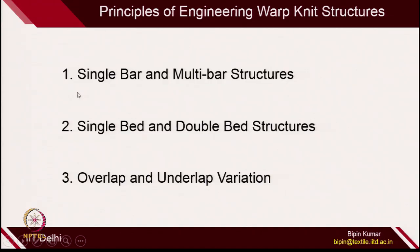Just a quick recap: if you want to engineer different types of warp knitted structures, there are 3 principles. Either you can go for single bar or multibar structure. In this lecture, I will be focusing only on single bar structure. Once you have chosen single bar or multibar, you can go for single bed or double bed machine — the bed represents how many needle beds you are using. Then you can go for overlap and underlap variations.